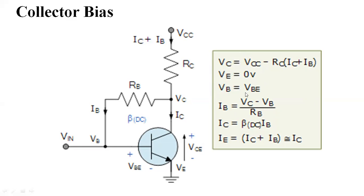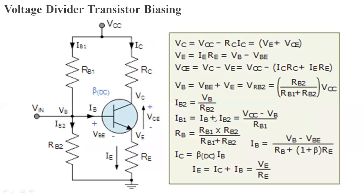VBE equals VBE. The potential across resistance RB is VC minus VB, so the current IB equals (VC minus VB) divided by RB. Similarly, IC equals beta times IB as per the formula, and IE equals IC plus IB. This is how, when collector bias is provided, we do the calculation of IC and VCE.